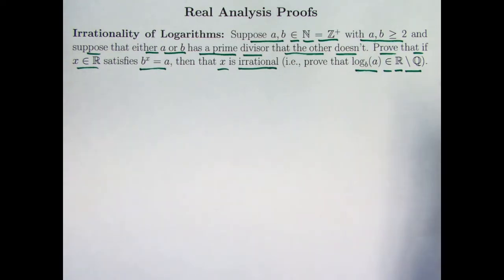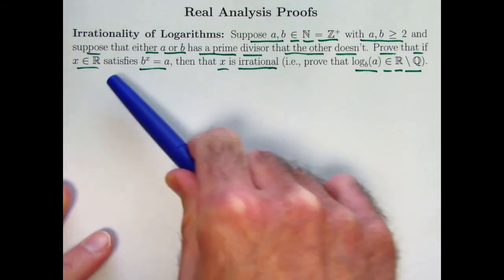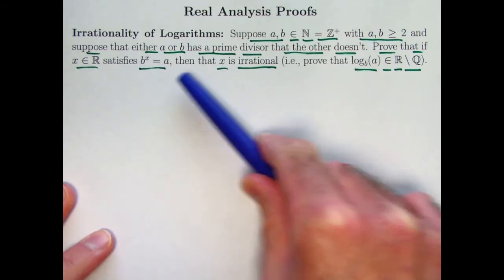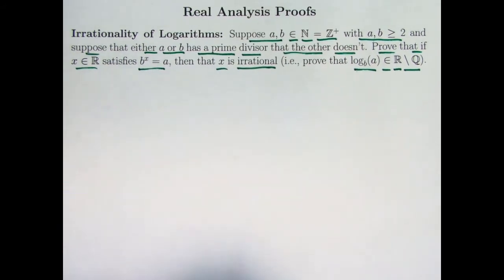I should also say, before I start the proof here, that I am not proving the existence of these kinds of logarithms. That's harder. I'm only proving that if such a logarithm exists, if such an x exists, then it must be irrational in this situation.